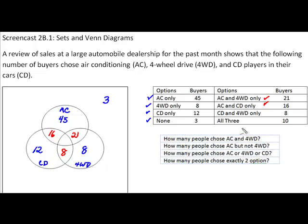That means we have one section of our three-circle Venn diagram left — the center for those that chose all three options. We have 10 of those, so we're going to enter those 10 right in there. And now we've completely filled in our Venn diagram, which is a pictorial way of looking at what we could see in the chart.